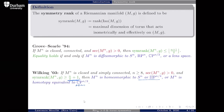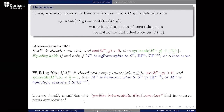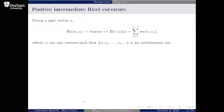Now we're going to take this program and ask: what if instead of looking at positively curved manifolds, we weaken the condition? We're going to look at positive intermediate Ricci curvature. The question is: can we classify manifolds with positive intermediate Ricci curvature that have large torus symmetries?